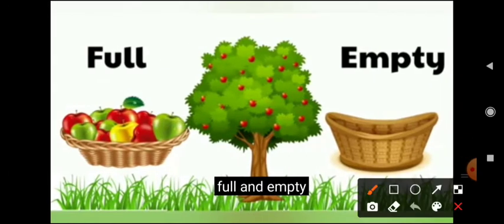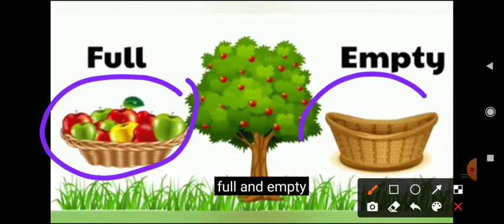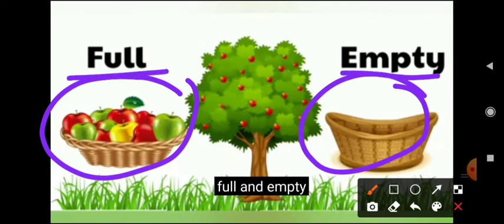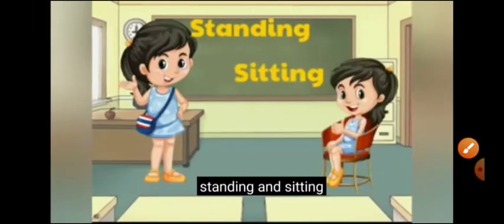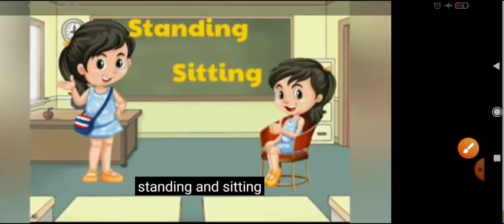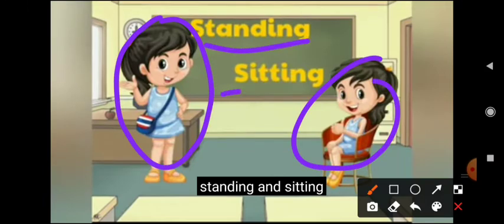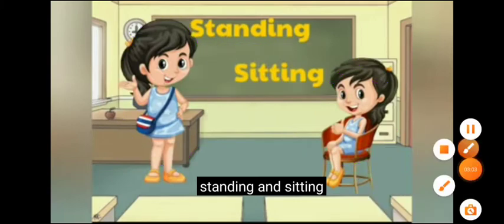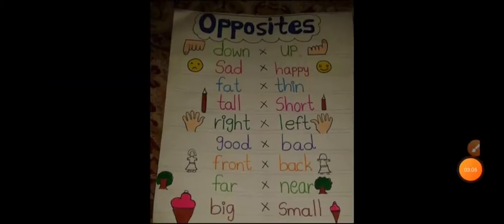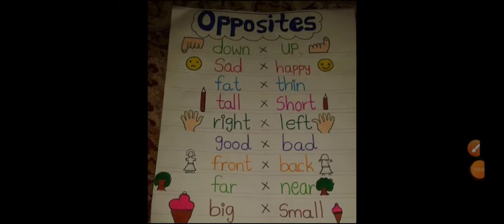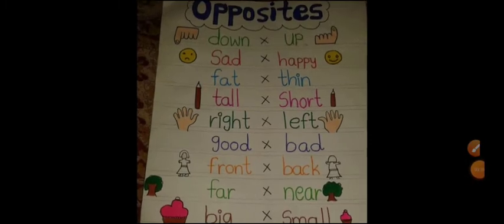The basket is full of apples. Here the basket is empty. Full, empty — the opposite word of full is empty. Here we can see the girl is standing, and here the girl is sitting. The opposite word of standing is sitting.